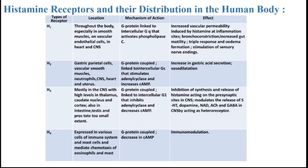Histamine receptors and their distribution in the human body. There are basically four types of receptors: H1 receptor, H2 receptor, H3 and H4 receptor. The H1 receptor is present all over the body, especially in smooth muscle and vascular endothelial cells.